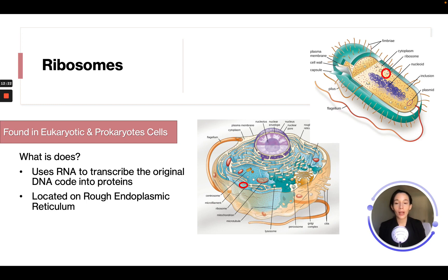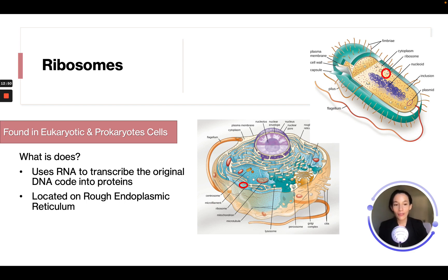In eukaryote cells there is a rough endoplasmic reticulum and a smooth endoplasmic reticulum. Here is a helpful trick: the rough endoplasmic reticulum starts with R, so it has ribosomes. The smooth endoplasmic reticulum does not have ribosomes. Keep that in mind — this distinction is likely to appear on an exam.